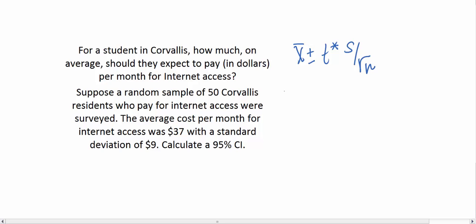So let's go ahead and figure out what each element is. X̄ is equal to $37, S is equal to $9, and N is equal to 50.